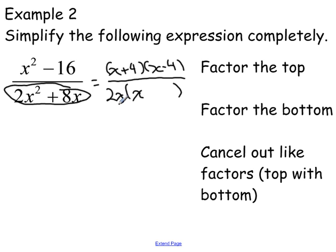And then, 2x multiplied by what will give me 8x? That would be 2x multiplied by positive 4 would give me 8x. Now, as the last step, you've got to cancel out like factors.